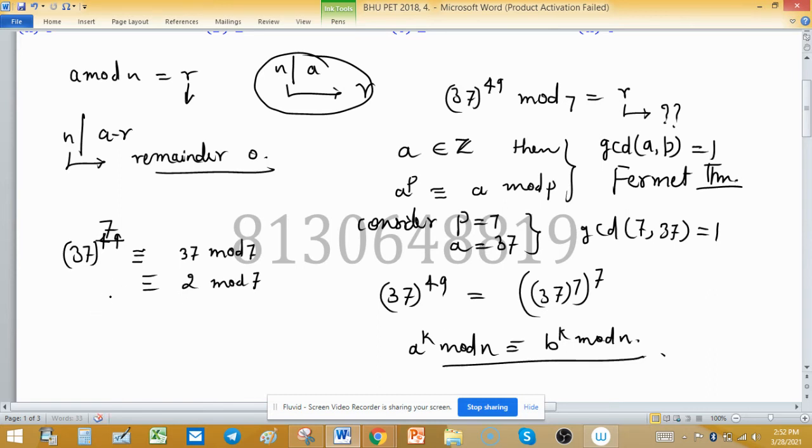So raise to power 7 both sides: 37 raised to the power 7 and whole to the power 7 will be congruent to 2 raised to the power 7 mod 7. This is 37 raised to the power 49, I can write mod here or there is no need. If you can write you can write, or not.